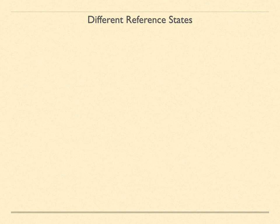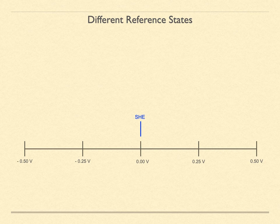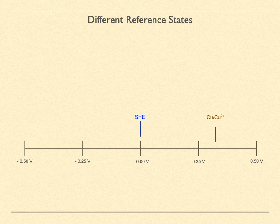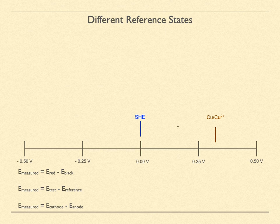These reference electrodes are commonly used in experimental electrochemical work. When thinking about measured potentials compared to the SHE, consider a number line of half-cell reduction potential — convention assigns the standard hydrogen electrode to the value 0, and we can measure all other half-cells against this one. For example, the Cu/Cu²⁺ couple is found at plus 0.339 V. With SHE in the reference position at the negative terminal and copper at the test terminal, the measured potential is the difference between these two potentials. The voltmeter measures the difference between the red and black terminals — that is, the difference between the test and reference half-cells.